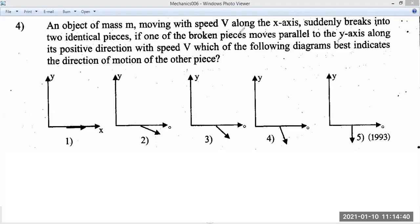An object of mass m moving with speed v along the x-axis suddenly breaks into two identical pieces. So, first of all, let's start.